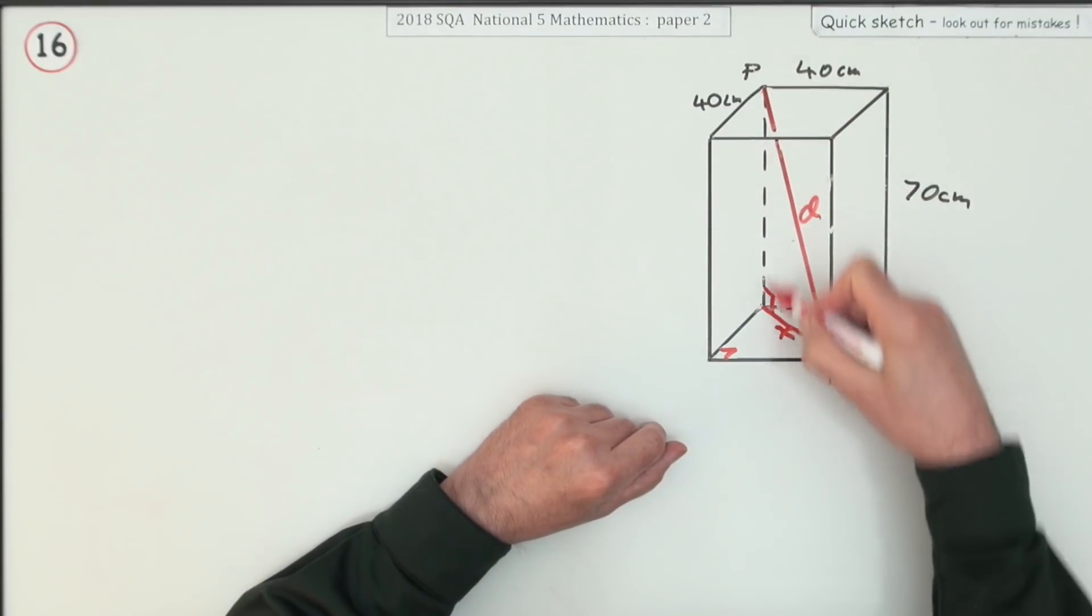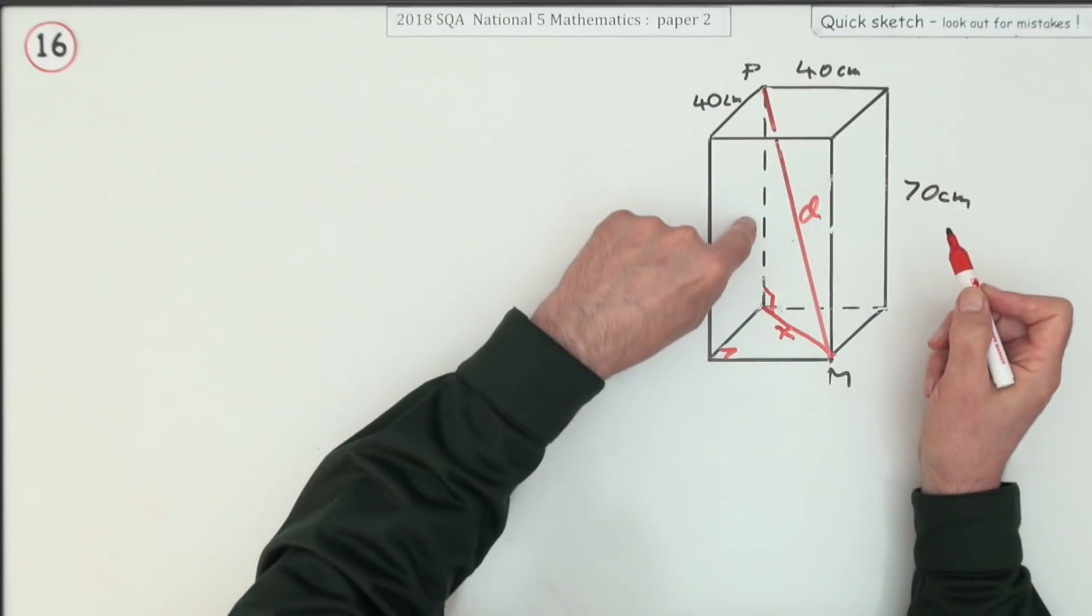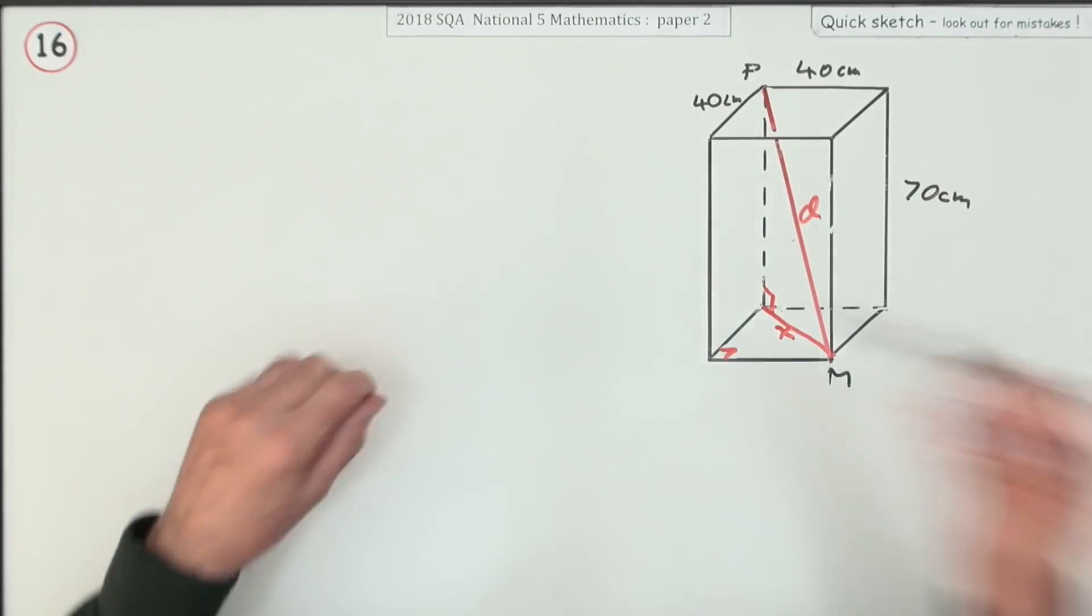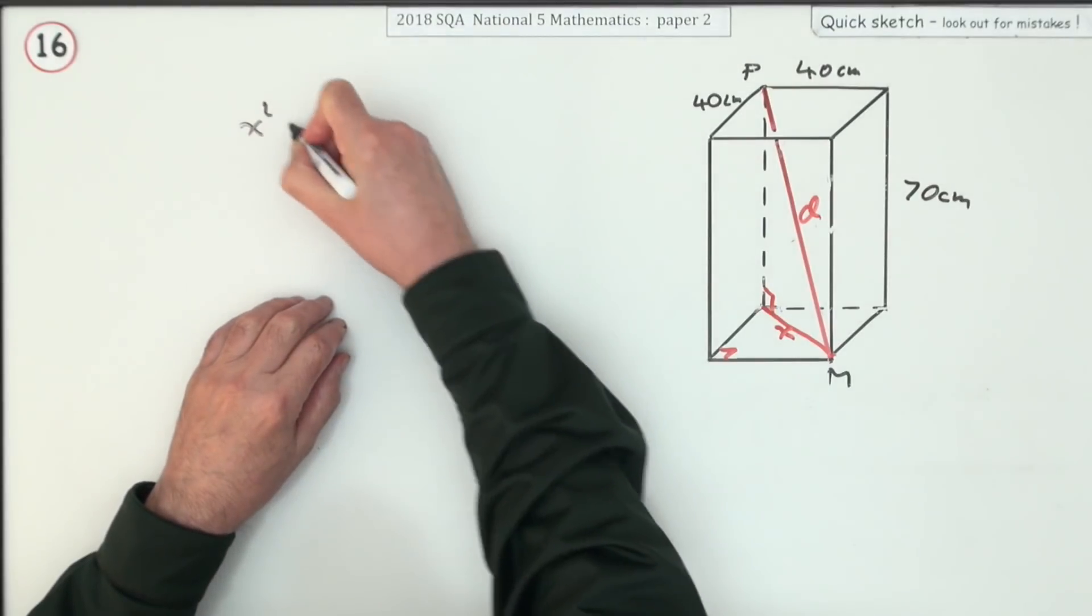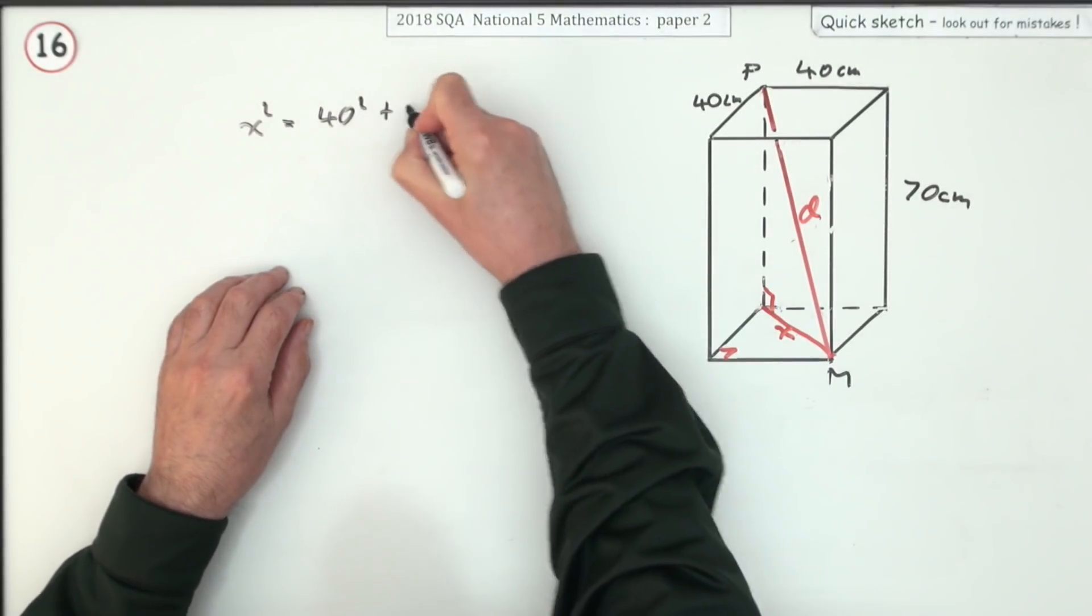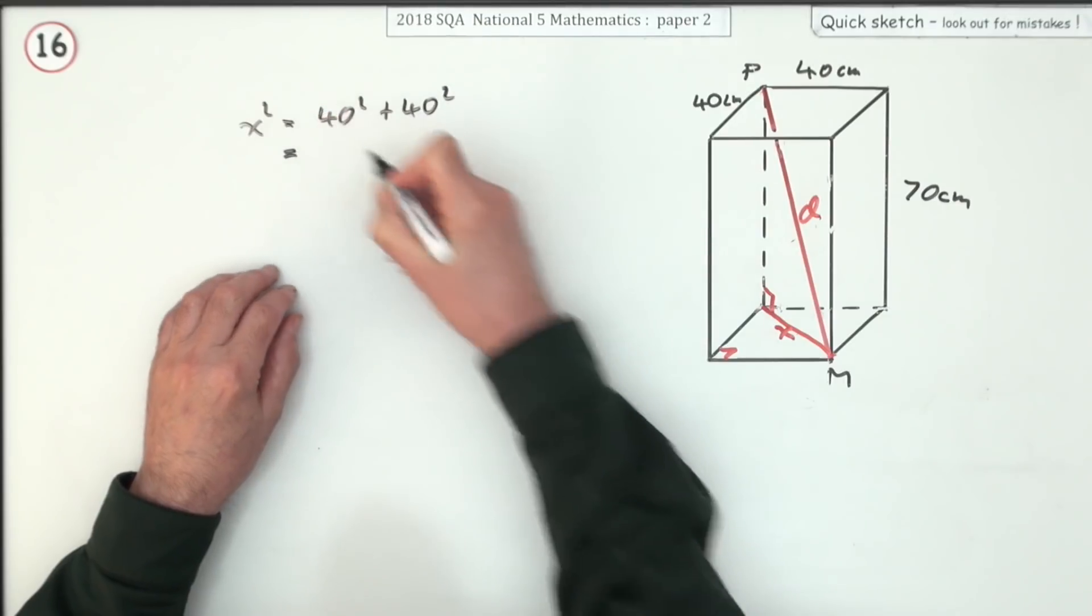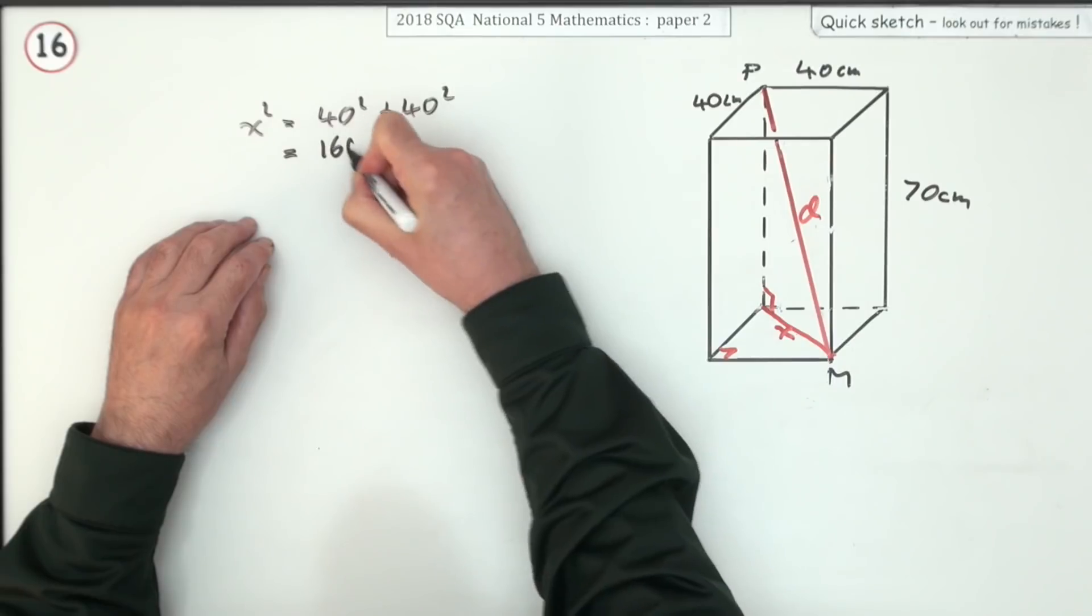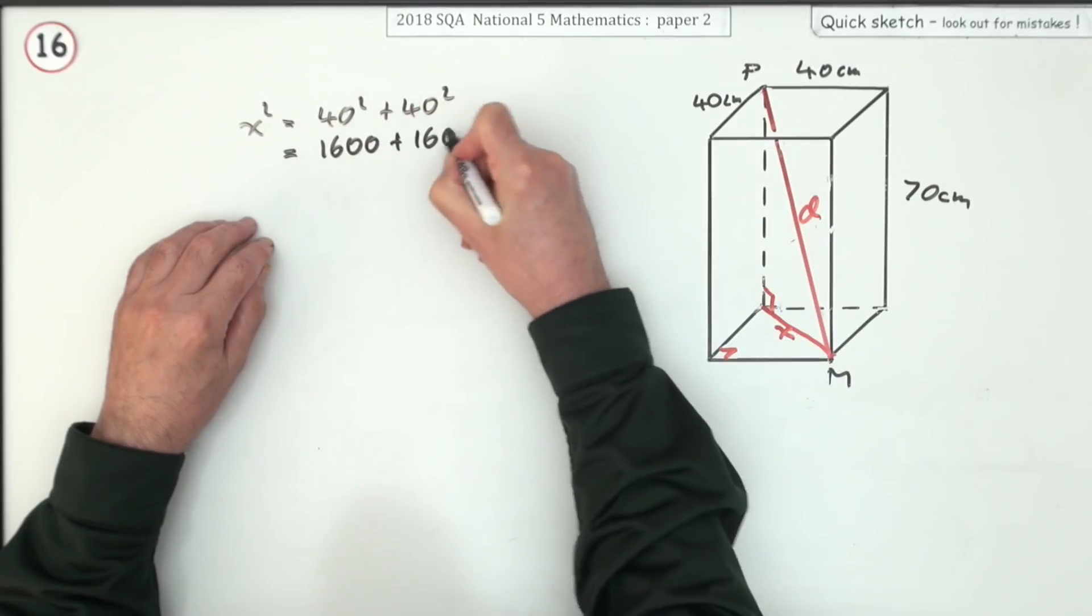I know that distance is 70 and those are both 40, so I'll work out x first of all. x squared is going to be 40 squared plus 40 squared—that's two lots of 40 squared. Just put it down: 1600 plus 1600, which is 3200.